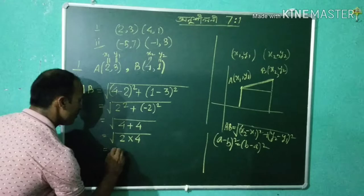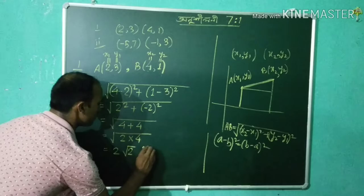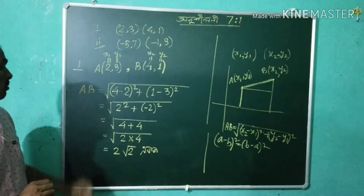That means 2 times 4 equals 8, so the square root of 8 is 2 root 2. Therefore AB equals 2 root 2.